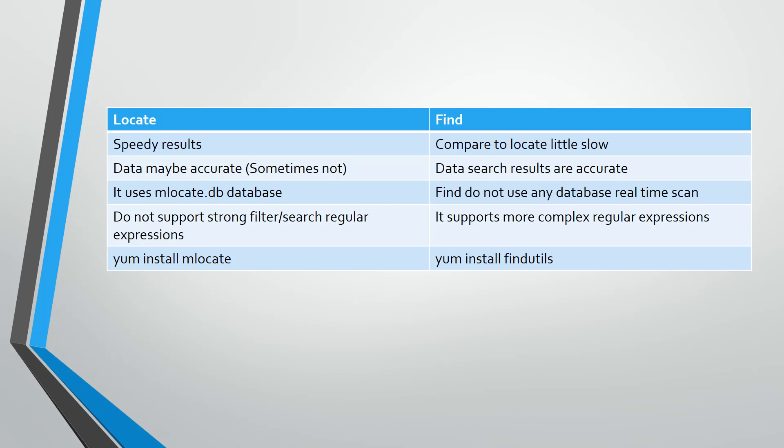So if you look at the difference table — locate vs find — when you are searching for a simple file, locate gives a faster result compared to find. That's because find searches the entire file system in real-time, whereas locate uses a database and fetches results from it.